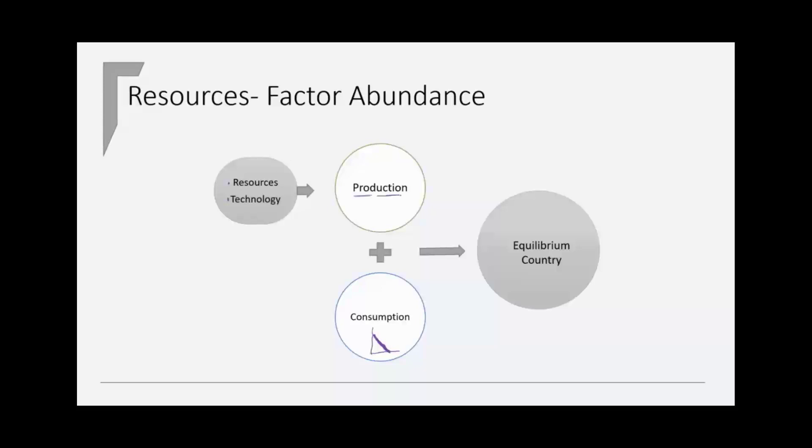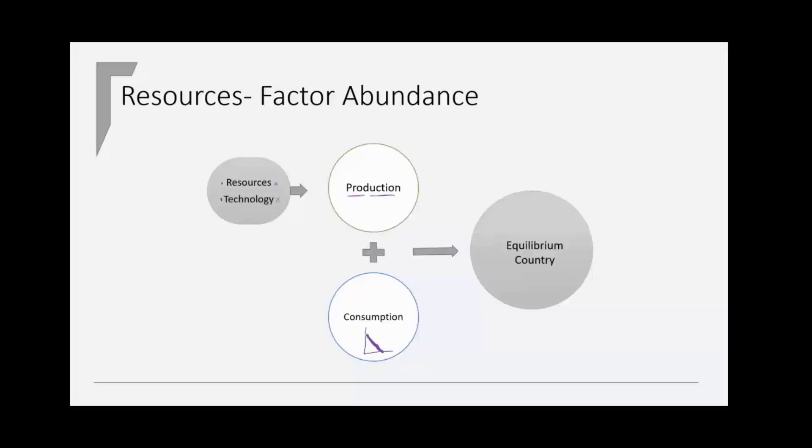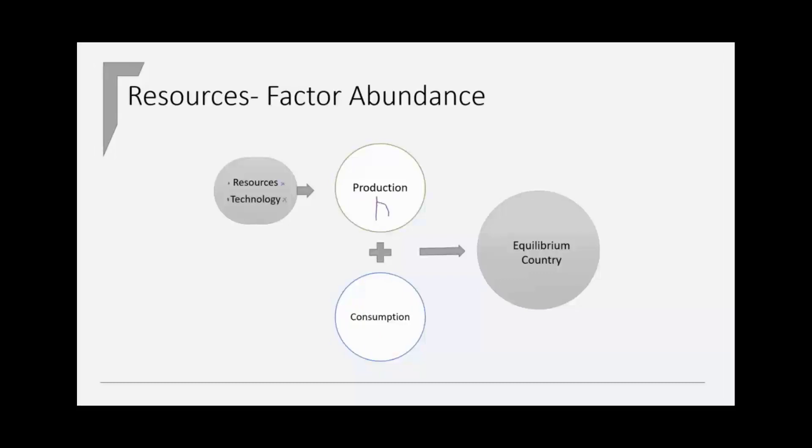And why? Well, because the differences across the countries in resources or technology, which affects the production side, it doesn't affect the consumption side. The production side would be the production possibility frontier. And the consumption side is your indifference curves. And that is going to be the equilibrium for the home country.